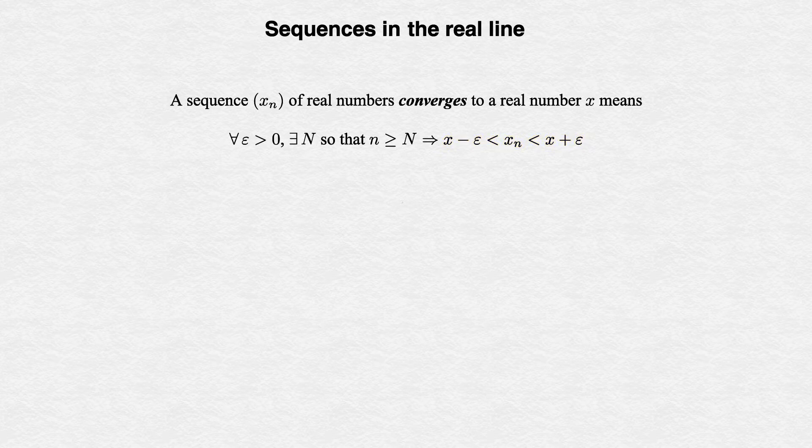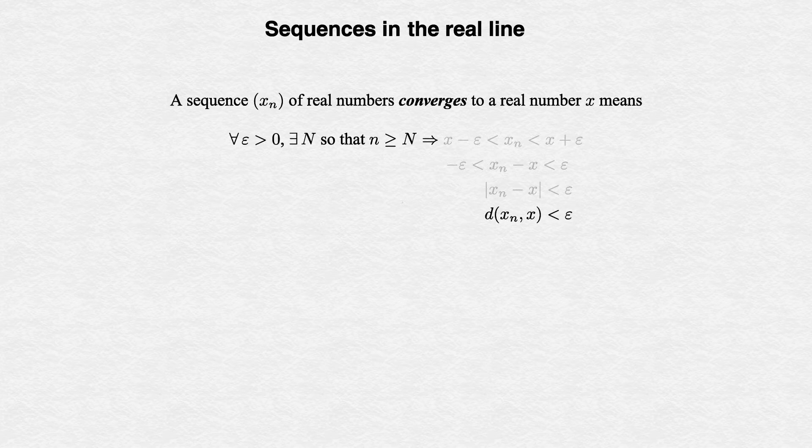Subtracting x from all three quantities gives -epsilon < x_n - x < epsilon. Now we can recognize that saying x_n - x is between -epsilon and epsilon is the same as saying its absolute value is less than epsilon. And finally, we should recognize that absolute value of a difference as our metric on the real line. In a general metric space (M,d), we simply change this to d(x_n, x) < epsilon.